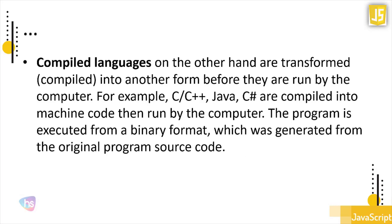Compiled languages, on the other hand, are compiled from one language to another language, then run after being converted into a system-readable language so we can see the output in the browser. For example, C, C++, Java, C#, and F# are compiled into machine code and then run by the computer. The program is executed from binary format generated from the original program source code — this is called a compiled language.